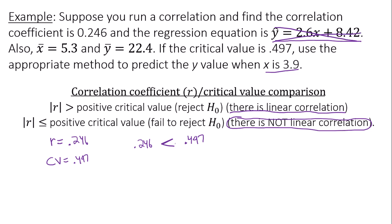So you might be thinking, well, how do we predict the y value when x is 3.9? Well, anytime you can't use the linear regression equation, meaning there is not linear correlation, you will use y-bar, or the average of the y values, as the best prediction.